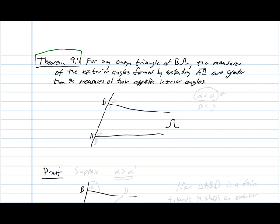So for any omega triangle A, B, omega, the measures of the exterior angles formed by extending AB are greater than the measures of their opposite interior angles. So if this angle here is of measure alpha, and this angle here is measure alpha prime, then this theorem says that alpha is less than alpha prime.